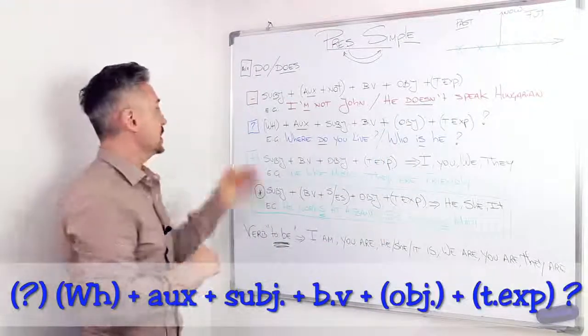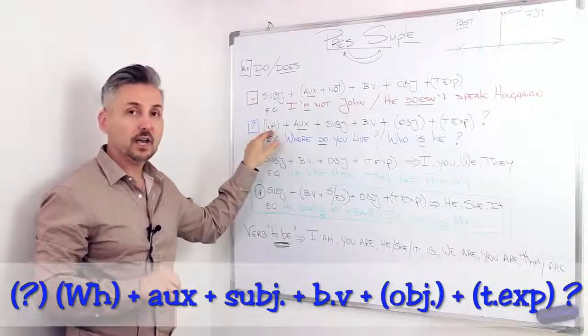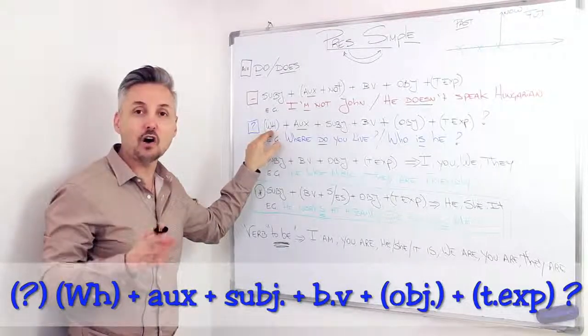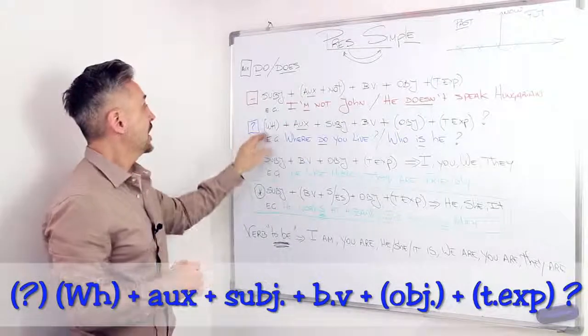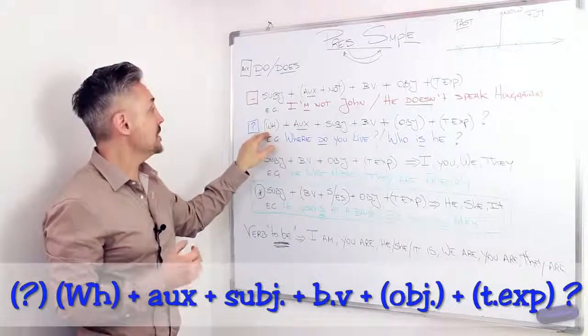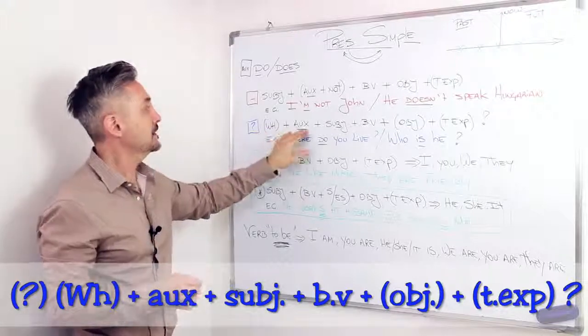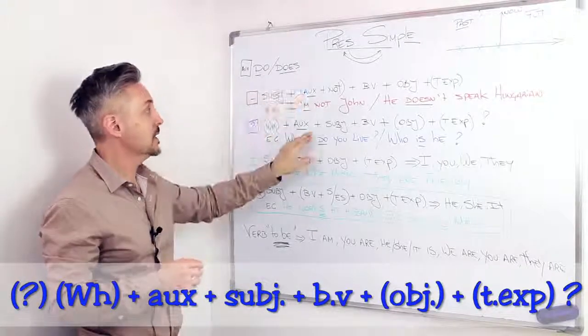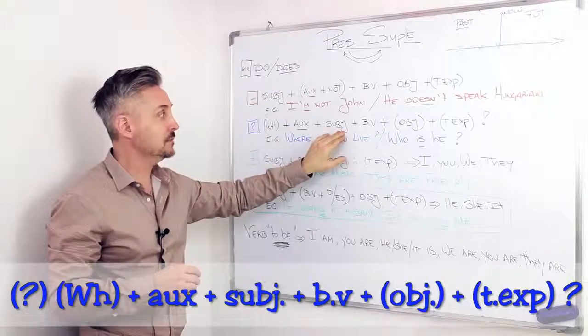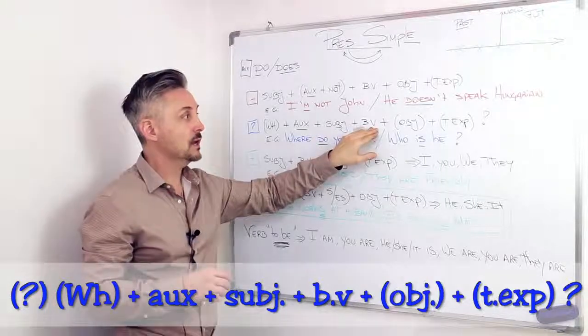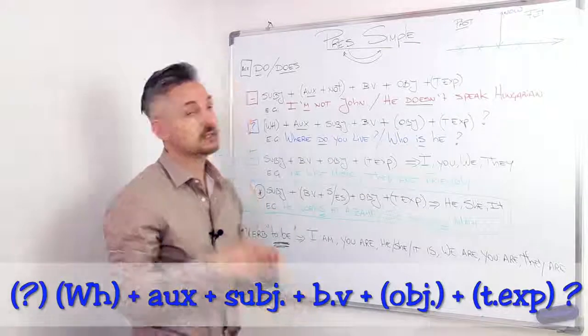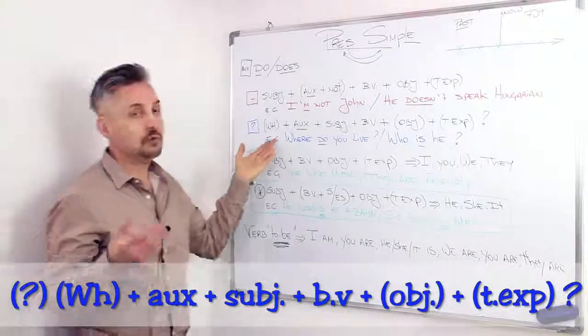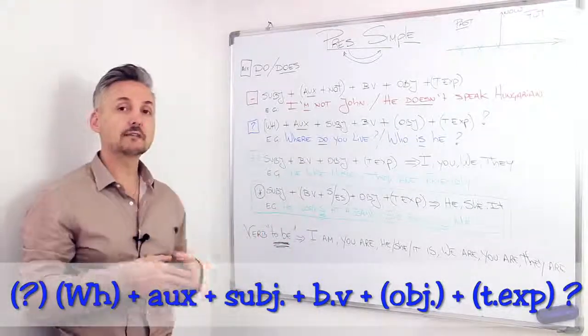Now, for a question, WH question word, if you haven't seen my lesson on making questions, you can click here. So as I said, WH question word, sometimes, then the auxiliary, do or does, then the subject, then the base of the verb, then the object, sometimes, and then the time expression, sometimes.